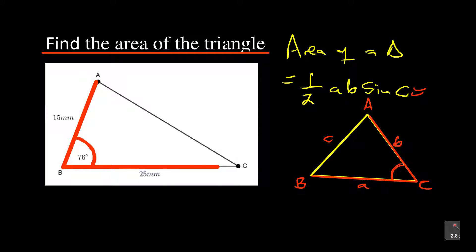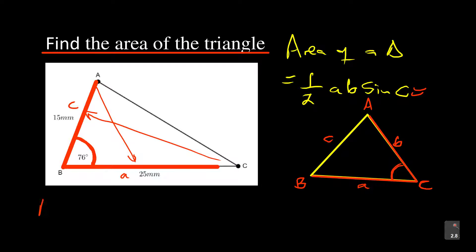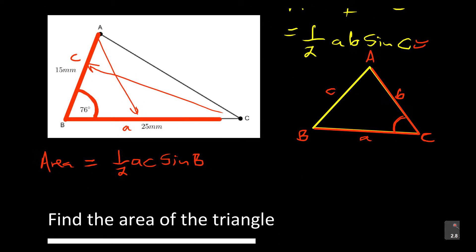If you are going to find the area of this triangle, this side is small c — it is opposite to C — and this side is small a. So the area equals half times a times c times sine of the angle formed between them, which is angle B.